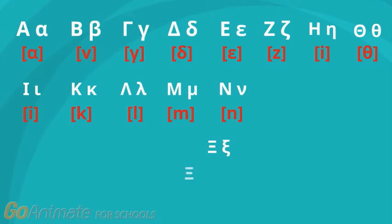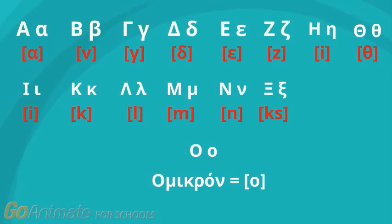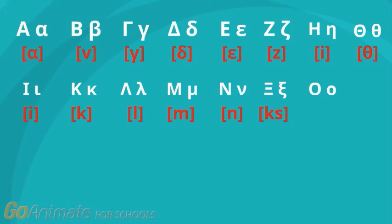Ksi is read as X, as in fox. Ksi, X. Omikron is read as O, as in got. Omikron, O.